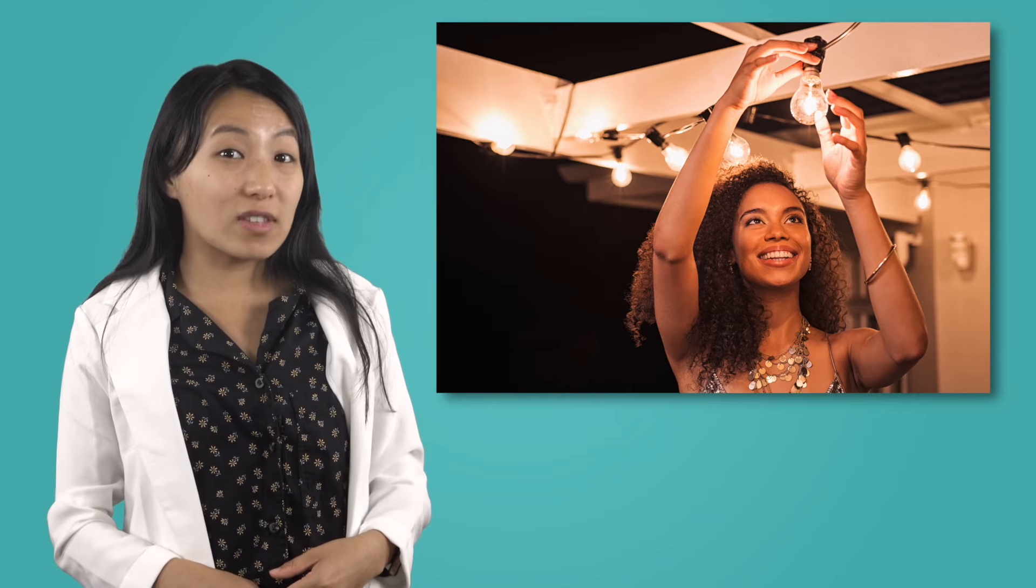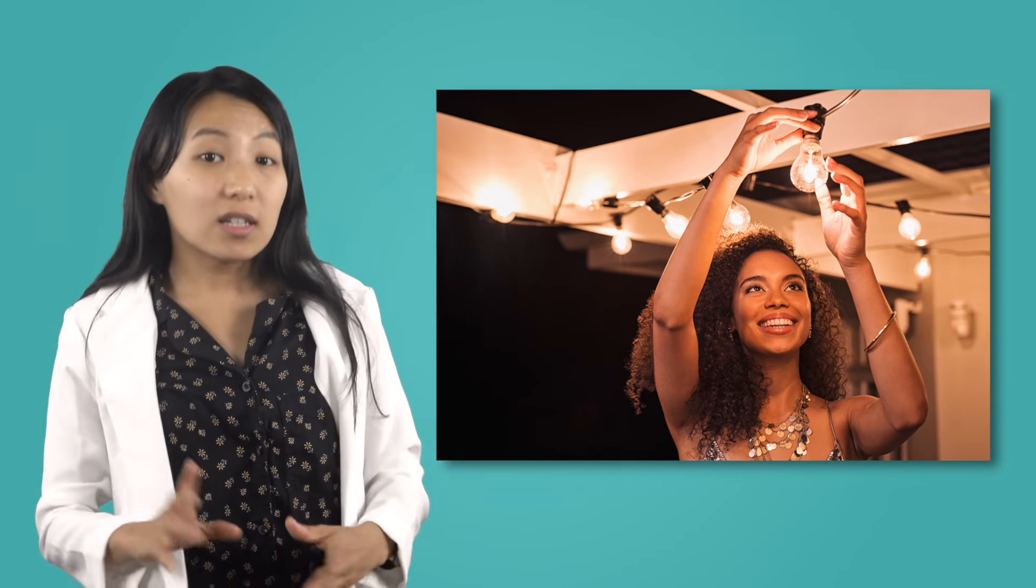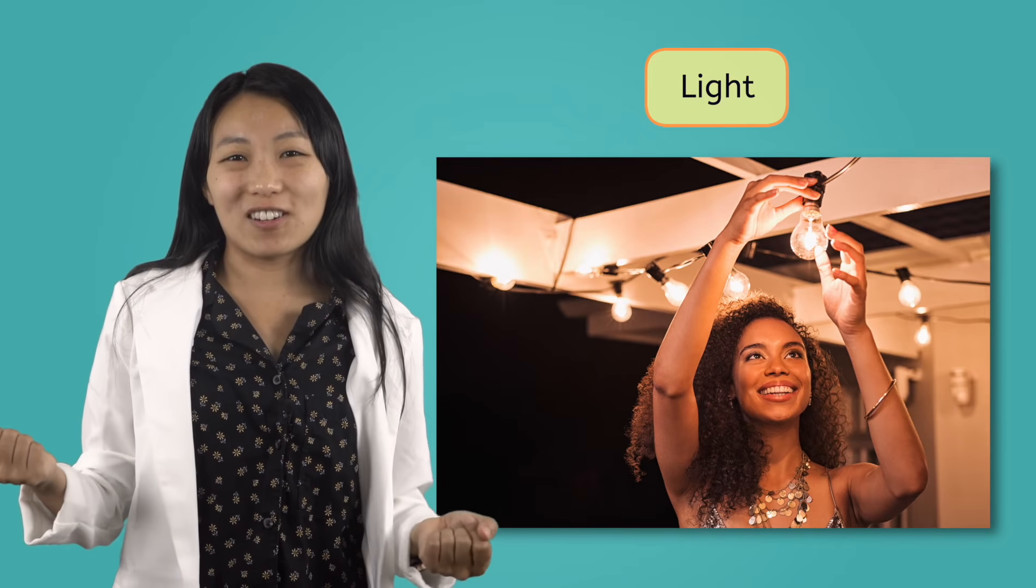Humans even use light bulbs to help us see in the dark after the sun goes down. So although not all living things require the same amount of it, light is necessary for all life on earth.